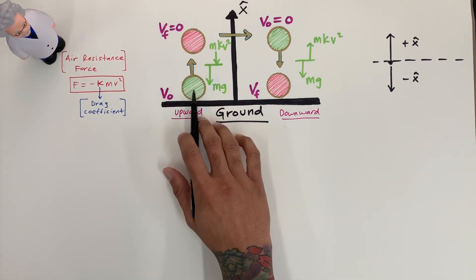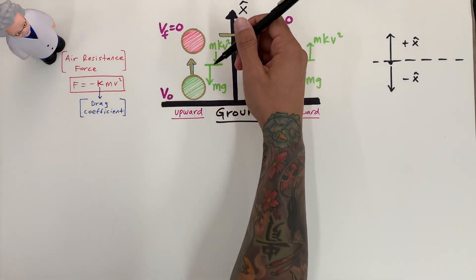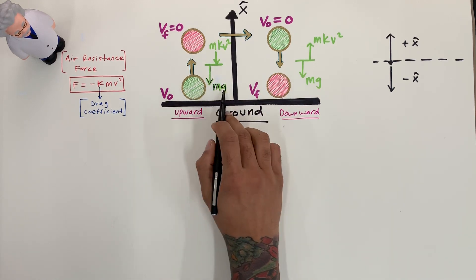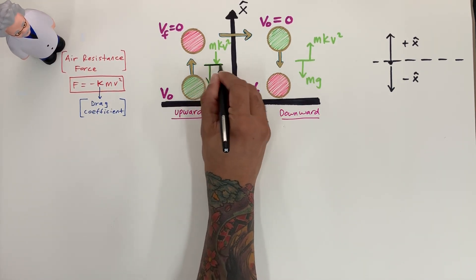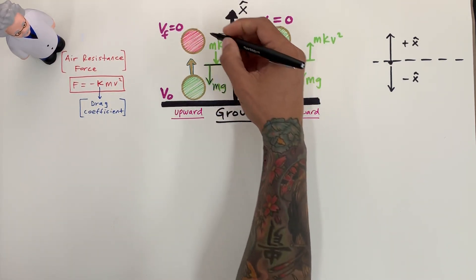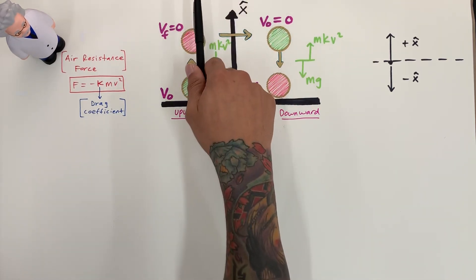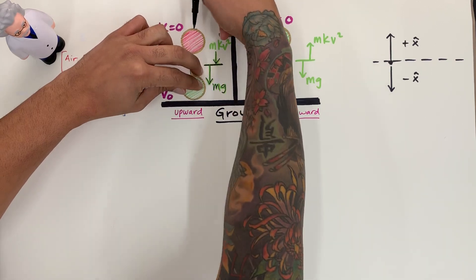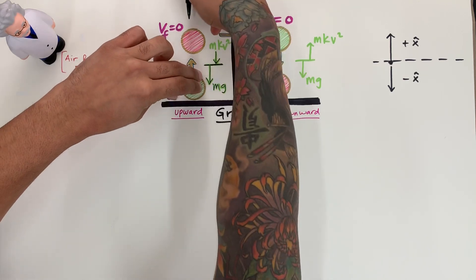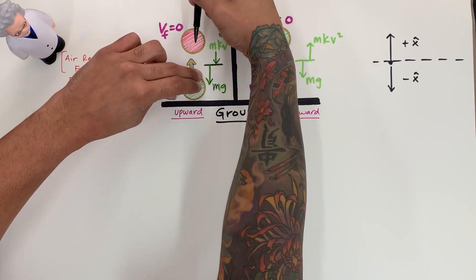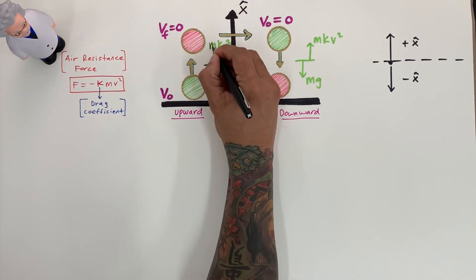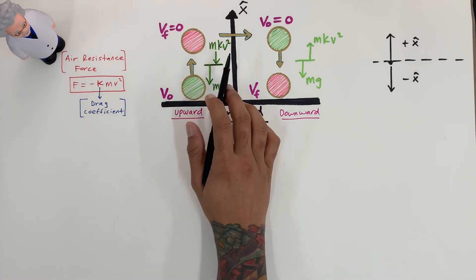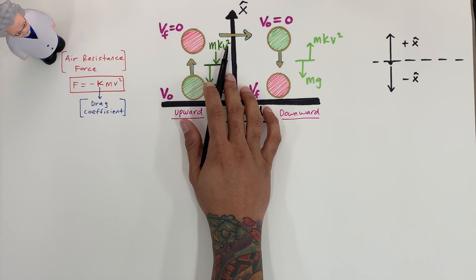As this ball goes up, it feels drag and air resistance. It's always going to feel gravity going downward — Mg, the mass of this object times gravity. You're also going to feel air resistance in the direction opposite to your motion, so downward. As the ball goes up, it's hard to push through the air full of molecules, nitrogen, and so on. We represent that drag by the air resistive force mkv², where k is the drag coefficient and v is the instantaneous speed of the particle at that point.